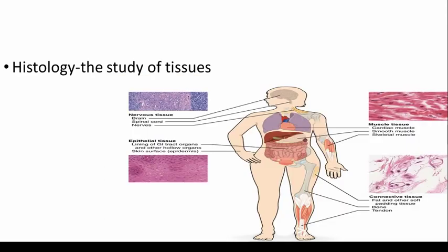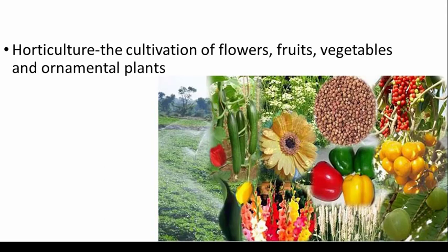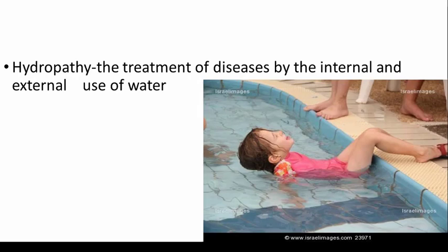Histology is the study of tissues — very common. Horticulture is the cultivation of flowers, fruits, vegetables, and ornamental plants, which is very popular nowadays. Hybridization is very popular, mutation is very popular, so horticulture is very popular.